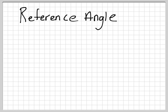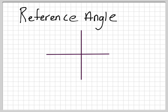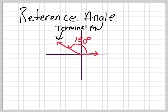So the reference angle, by definition — here's a little axis. I'm going to draw an angle in red so it stands out a little bit better. Here's an angle; let's call it 150 degrees. The reference angle is the angle that's made between the terminal arm — this guy right here is called the terminal arm — and the x-axis. The x-axis is right here; this is the y-axis. So that angle there is the reference angle, and I usually call it theta r.